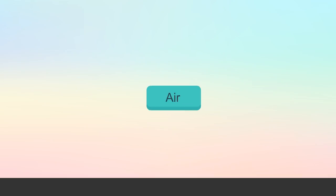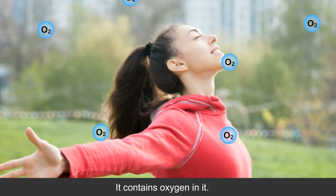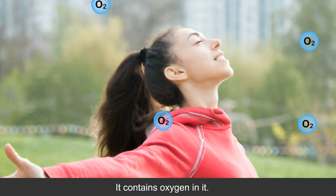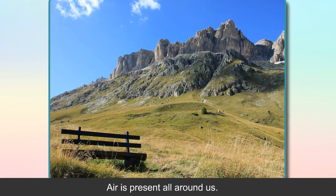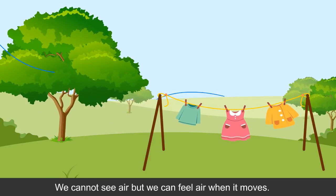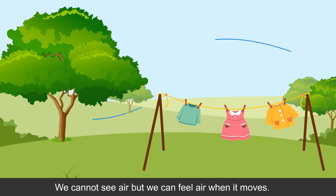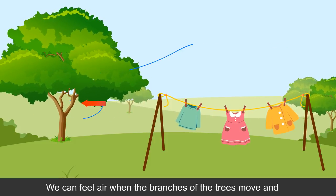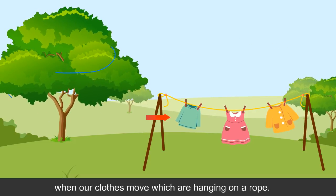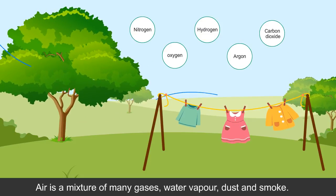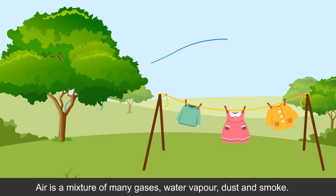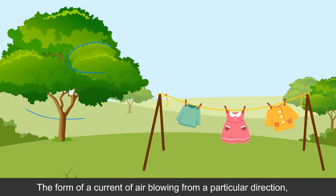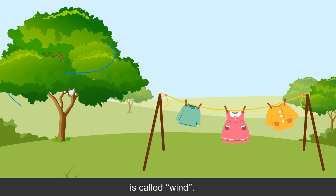Air is essential for life. It contains oxygen in it. Without air, we cannot live. Air is present all around us. We cannot see air, but we can feel it when it moves — when the branches of trees move and when our clothes move hanging on a rope. Air is a mixture of many gases, water vapour, dust and smoke.